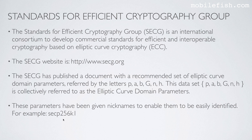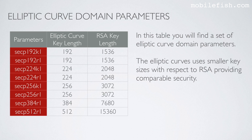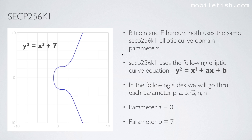For example, SECP256K1. In this table you will find a set of elliptic curve domain parameters. The elliptic curves use smaller key sizes with respect to RSA providing comparable security. If you look at SECP256K1, the elliptic curve uses a 256-bit key length, while its counterpart RSA uses a 3072-bit key length. Bitcoin and Ethereum both use the same SECP256K1 elliptic curve domain parameters.